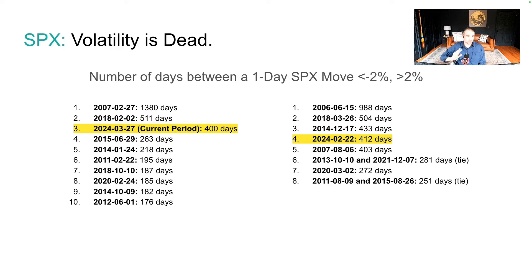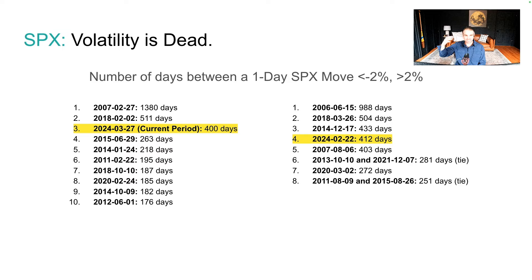One of the most violent drawdowns in market history occurred immediately after this very calm period. There's something about an extended period of calm that tends to end violently, and we're currently in that kind of peak of those periods.